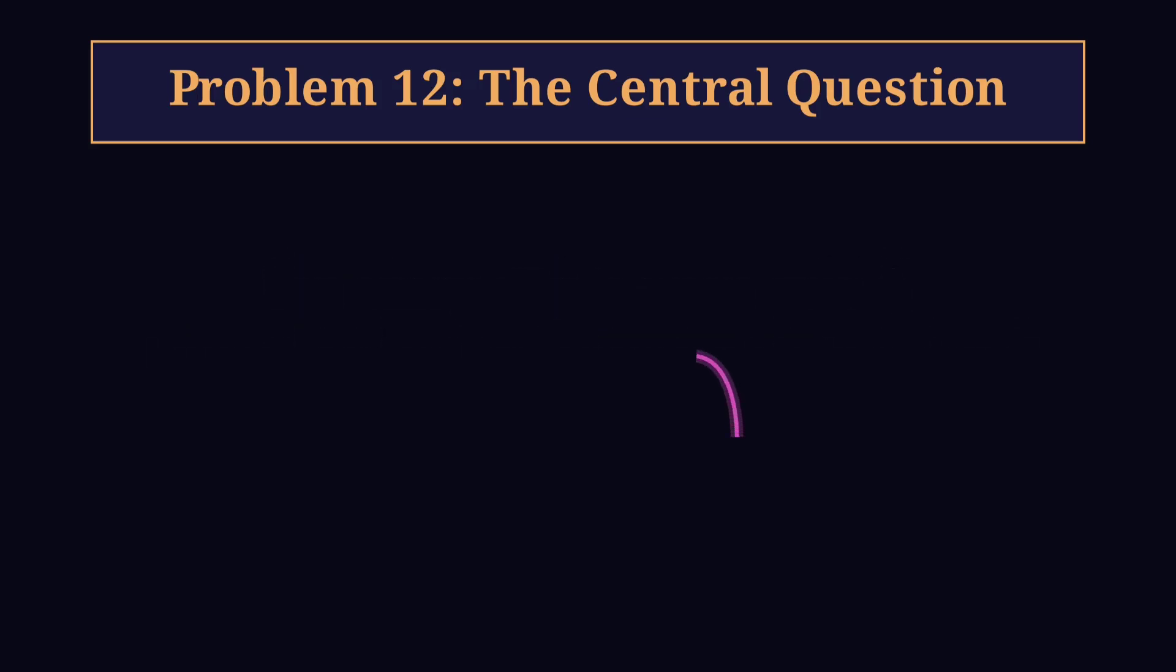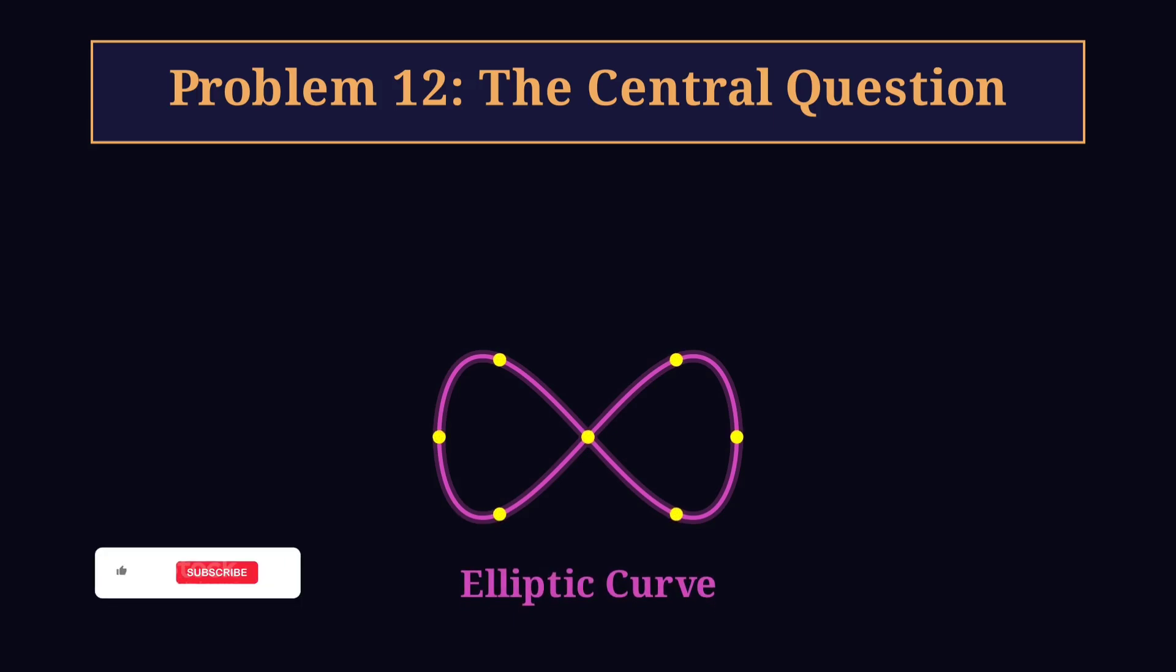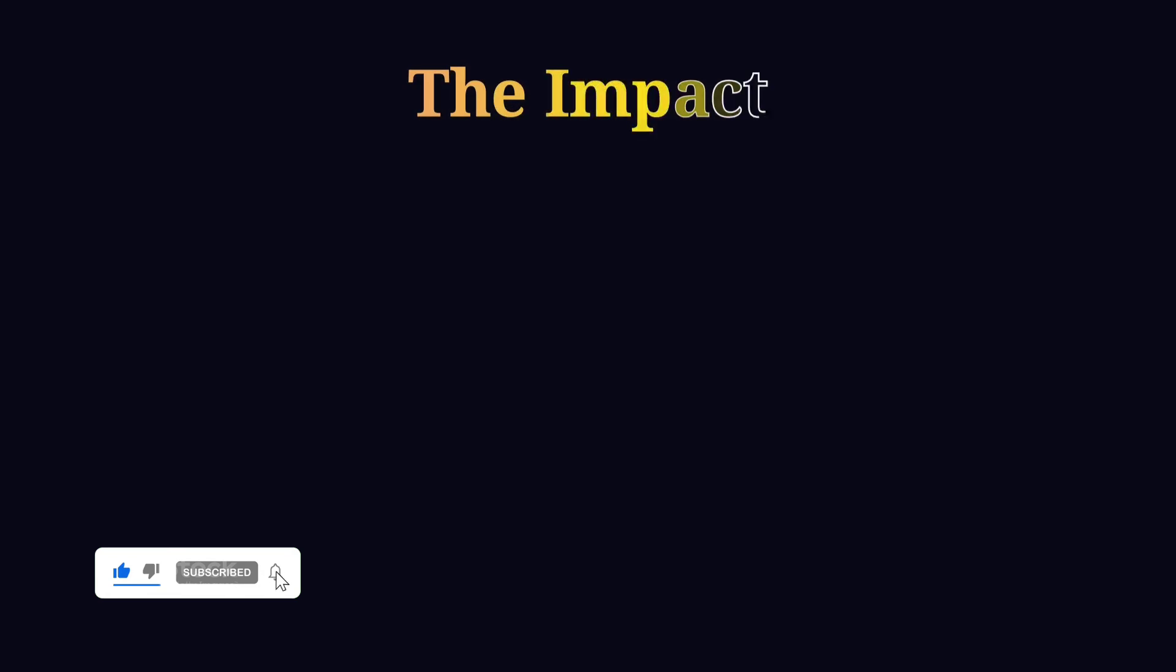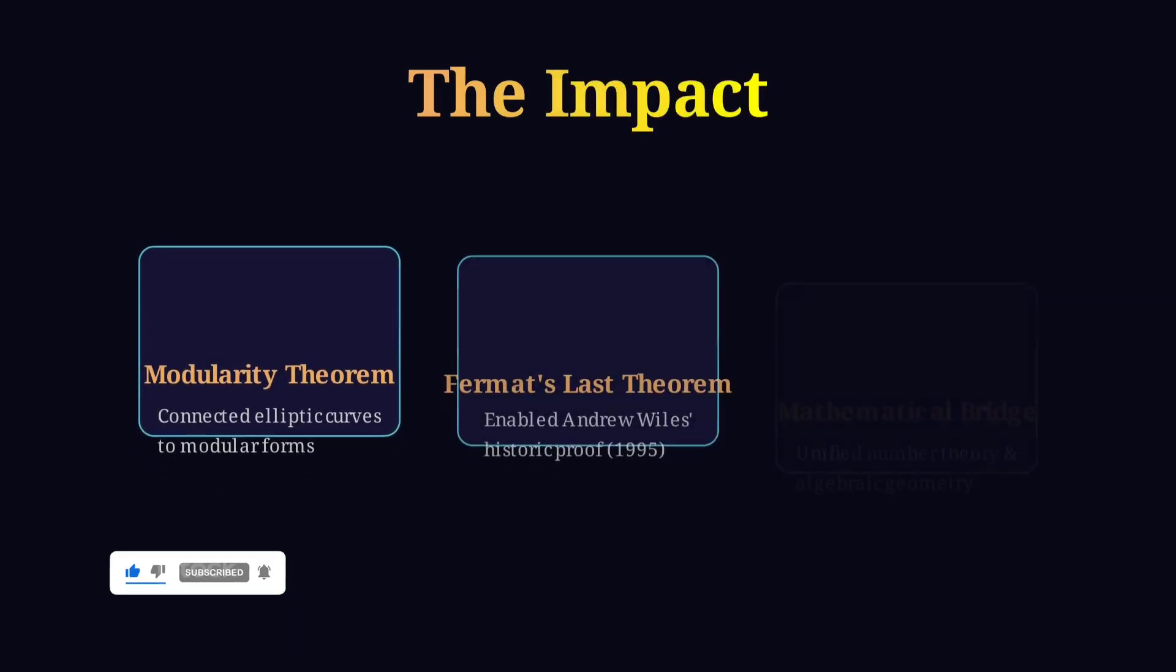This is an elliptic curve, graceful, symmetrical, but beneath its elegance hides a structure, a rhythm of points that mathematicians believed might resonate with something even deeper, automorphic forms.